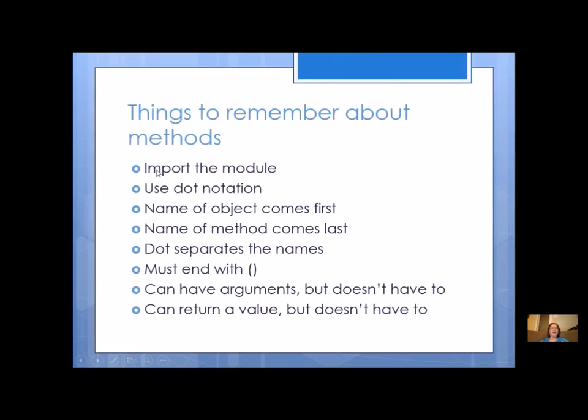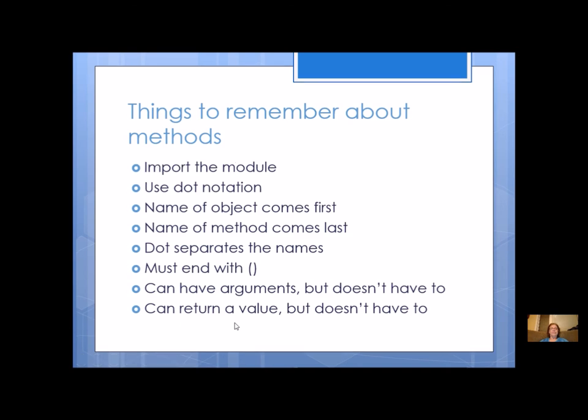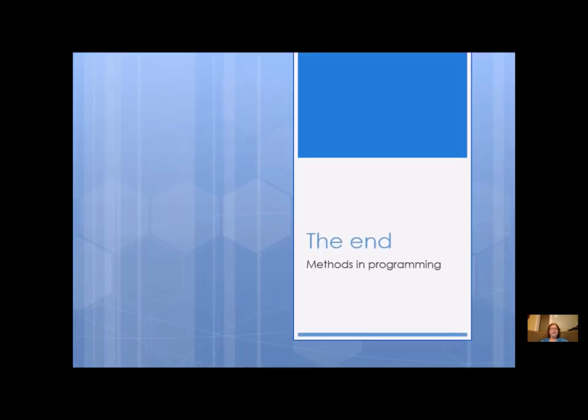Things to remember about methods. You have to import the module with the class that contains those methods. You're always going to use dot notation for a method call. The name of the object comes first. The name of the method comes last, and the dot separates the names. You must end a method call with parentheses. Often times you will have arguments inside the parentheses, but not always. You can have arguments, but it doesn't have to. And a method can return a value, but it doesn't have to. If you take a look at halt, that's not returning anything. That's a void method. And you look at temperature, that's going to be a return method. So I hope this little video lecture was helpful and gave you some more information about methods.